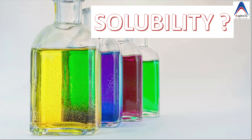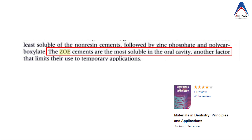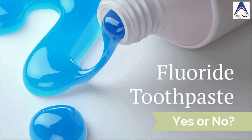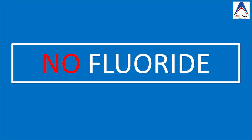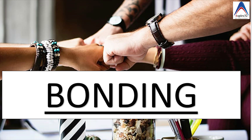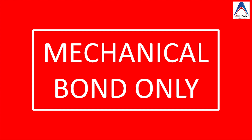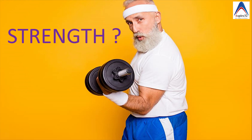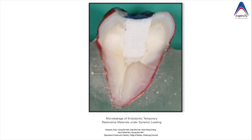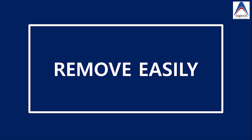Comparing solubility, zinc oxide eugenol cement is the most soluble of all dental cements. It also has no fluoride-releasing property, so it possesses no anticariogenic effect. Bonding is limited to mechanical retention only — no chemical or micro-mechanical bonding. The strength can range from 3 MPa to 55 MPa, but since it is mostly used as a temporary material, strength around 35 MPa is appropriate so it can be removed when placing a permanent restoration.